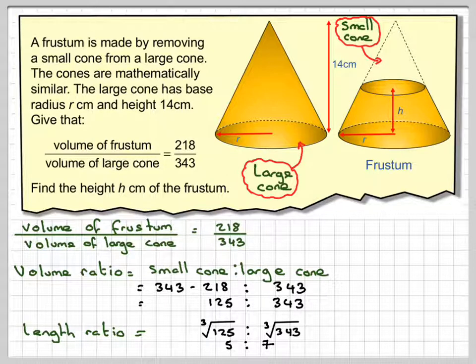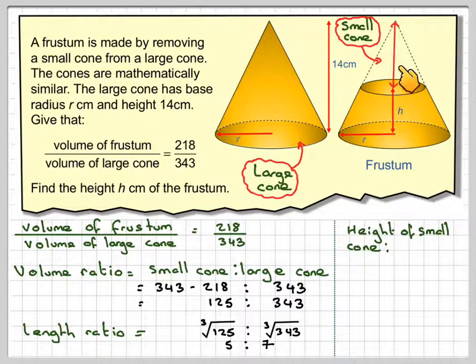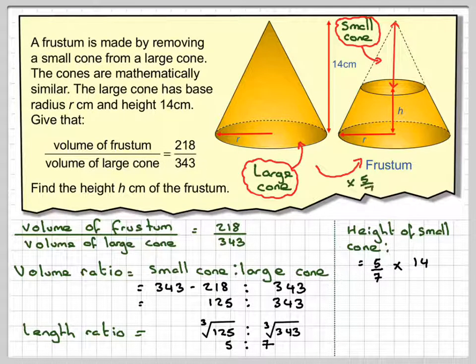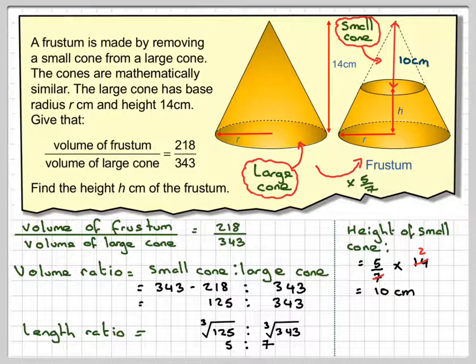So we've got a length ratio. The height of the smaller cone, which is this height here, is going to be 5 sevenths, because we're going from the larger to the smaller cone. So it's 5 over 7 times 14, which is 5 sevenths. So 5 sevenths of 14. Well, 7 goes into 14 two times, 2 times 5 is 10 centimeters. So this height here is 10 centimeters.